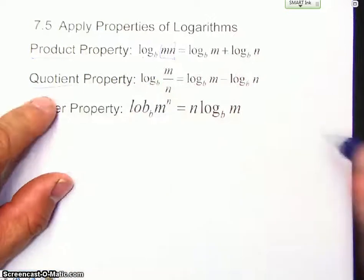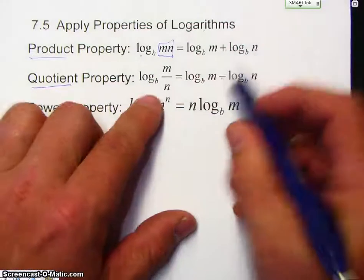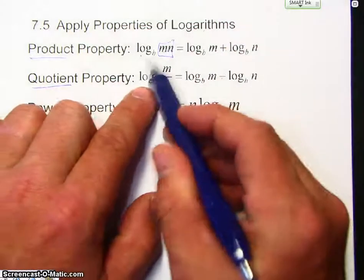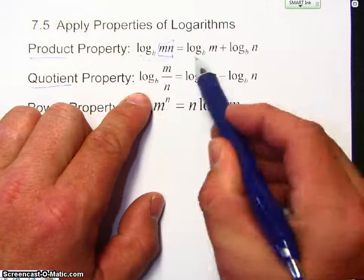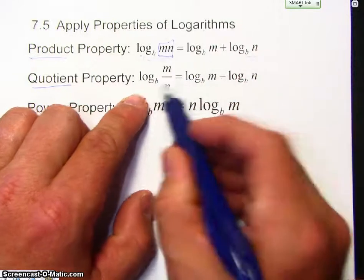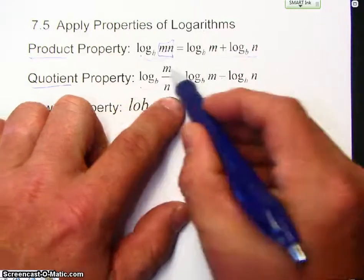Quotient property is division, so that means it's subtraction. So, I'm taking a single logarithm, and I'm expanding it. Single logarithm, expanding it.